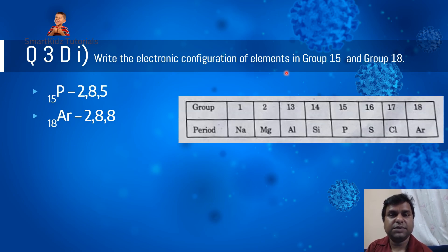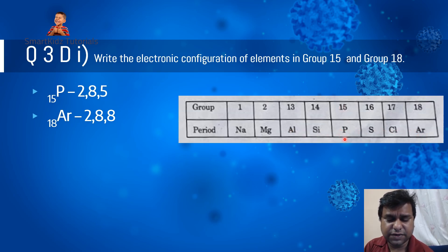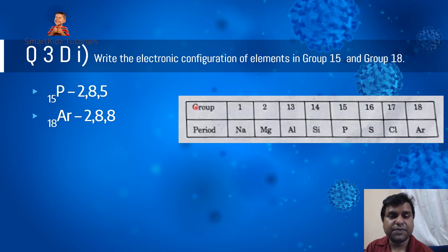Question 3D1: write the electronic configuration of elements in Group 15 and Group 18. Group 15 contains phosphorus (atomic number 15) with configuration 2, 8, 5. Group 18 contains argon (atomic number 18) with configuration 2, 8, 8. Argon has the noble gas configuration where all three shells are filled. For phosphorus there is space for three more electrons in the outer shell, but we are only asked for the electronic configuration.